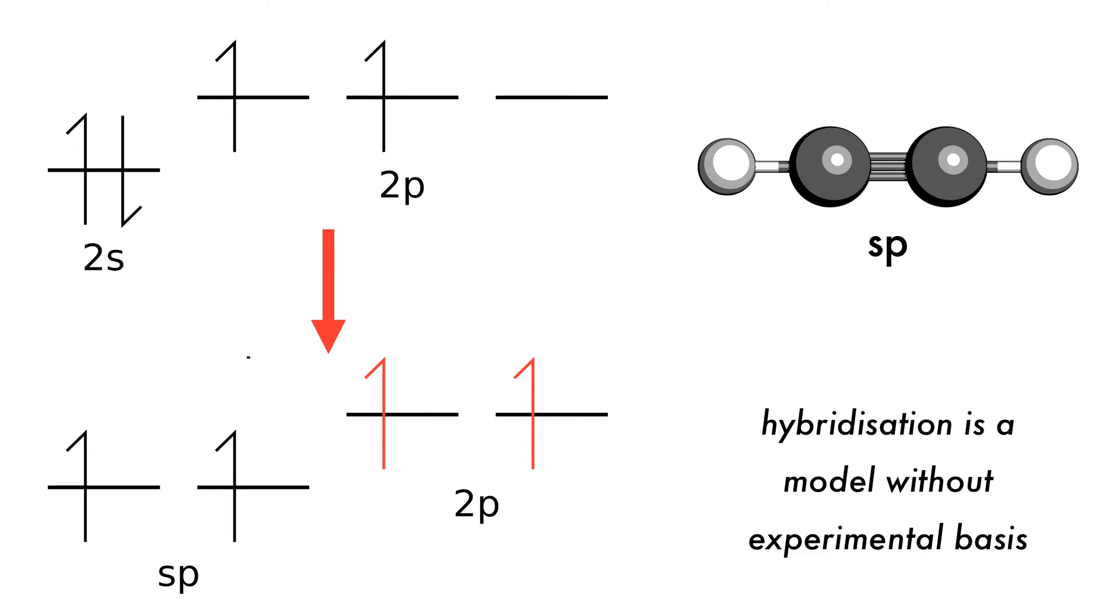But of course, hybridization is a descriptive model. The bonding in ethyne and even ethene can be understood fully using VSEPR theory.